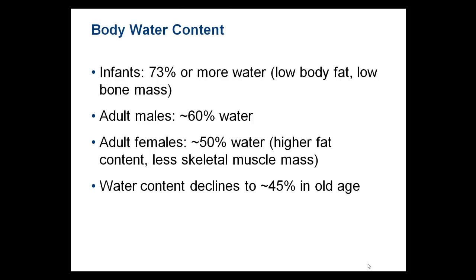In adult males, 60% of the body would be water; in adult females, 50% of their body would be water. That's because of more fat — when you have more fat, you have less water. They also have less skeletal muscle mass. In old age, we tend to lose our water percentage because we lose muscle mass and there is generalized thinning of the tissues that happens with old age.